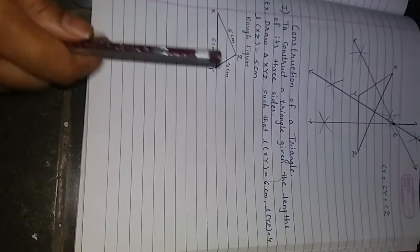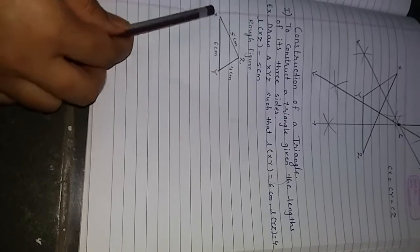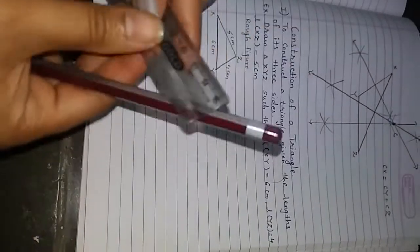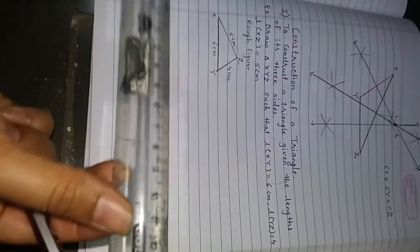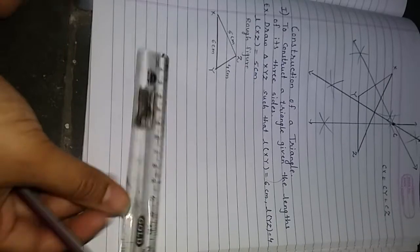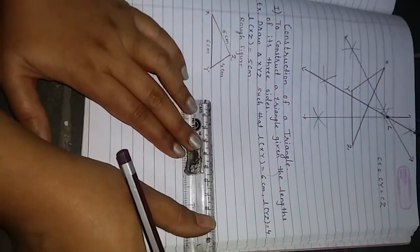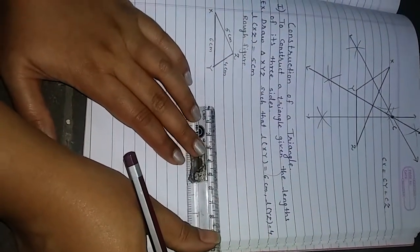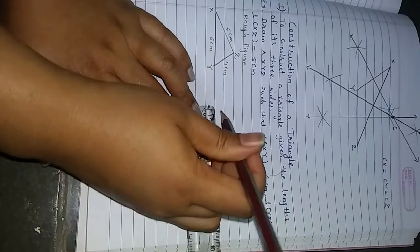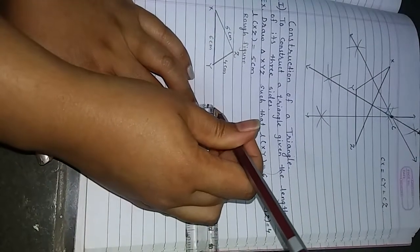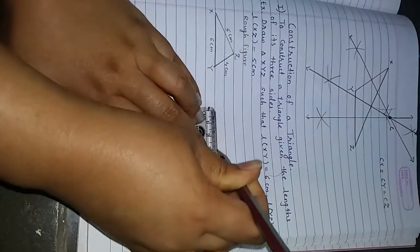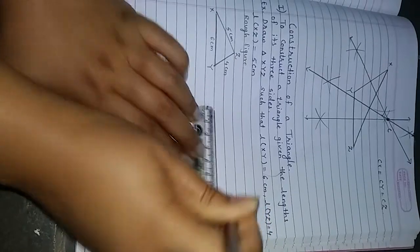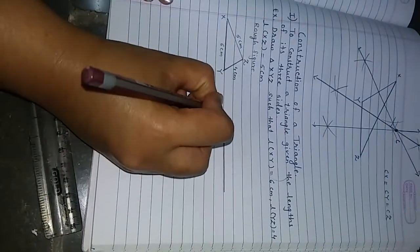Now see how I am constructing. First, draw XY as 6 cm. I am using a scale to draw XY as 6 cm.